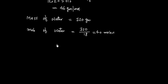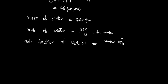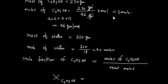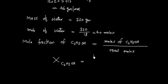Now we can calculate the mole fraction of ethyl alcohol (C2H5OH). Mole fraction of ethyl alcohol equals moles of ethyl alcohol divided by total moles. That is 5 divided by (5 plus 40), which is 5/45, equal to 1/9. Mole fraction has no unit, so this is simply 1/9.